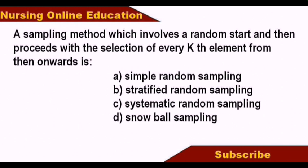The answer is systematic random sampling. In systematic random sampling, we select a periodic interval for participants or samples.